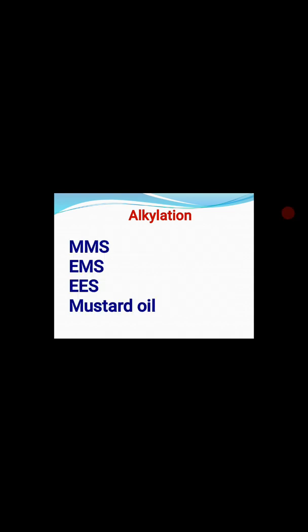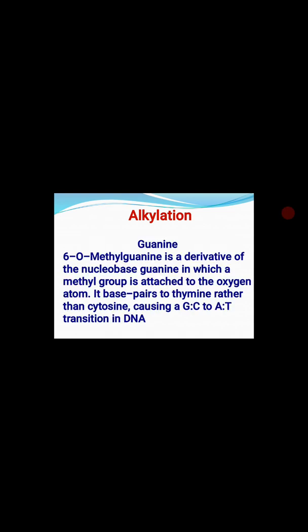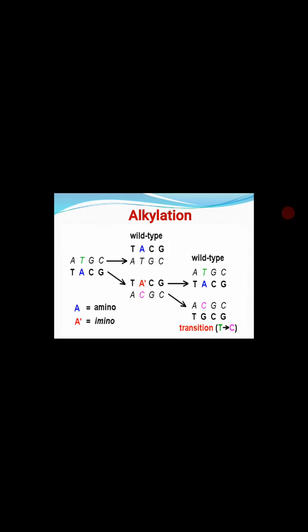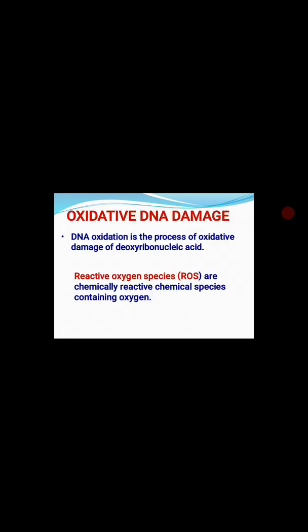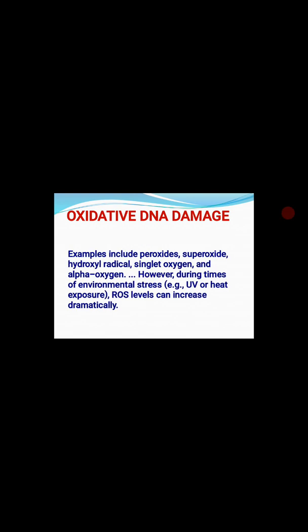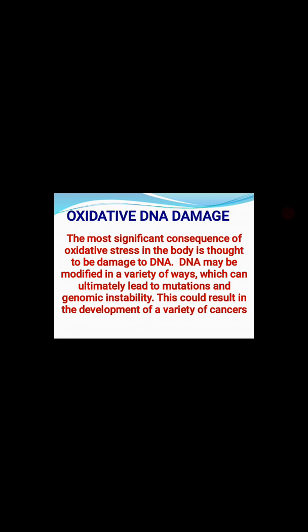We will skip the alkylation slides as we have discussed enough about the alkylation process, including how a damaged base affects the replication cycle and how transition or transformation happens. We will directly go to pyrimidine dimer formation today, as oxidative damage has also been covered previously.